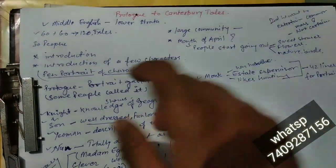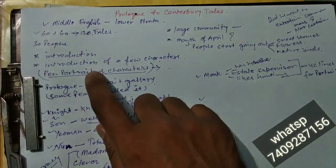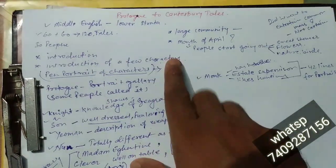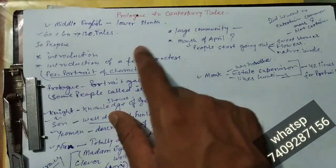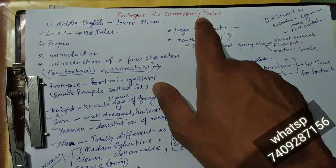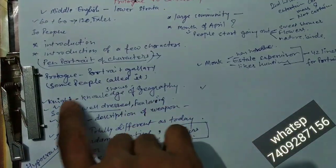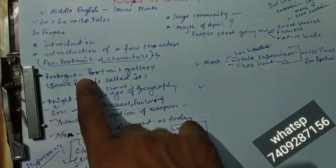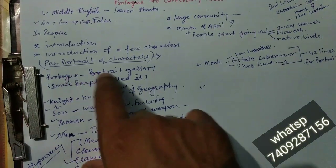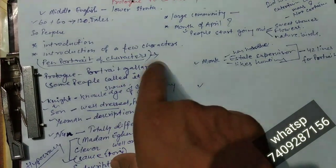The next one is the introduction — introduction to a few characters. It was an introduction to Canterbury Tales. Hopefully you are getting it. The Prologue is also called a portrait gallery.